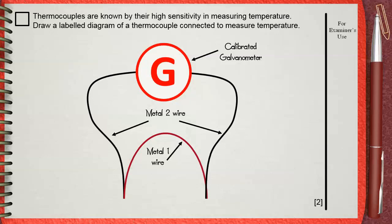This connection between the two different metals, metal 1 and metal 2, this is the cool junction. The same one on the other side is named the hot junction.